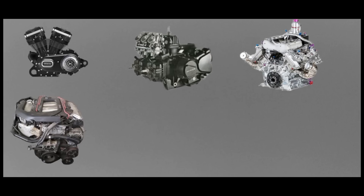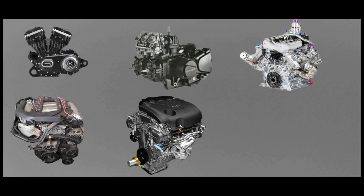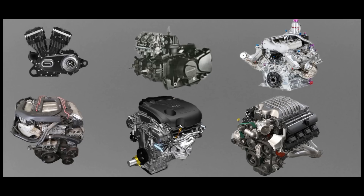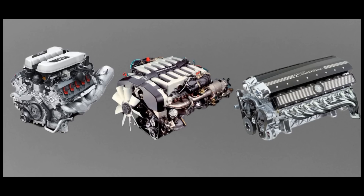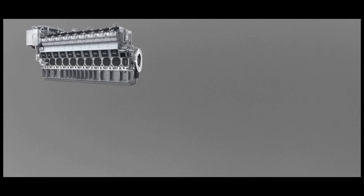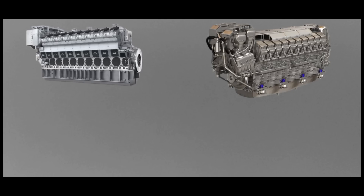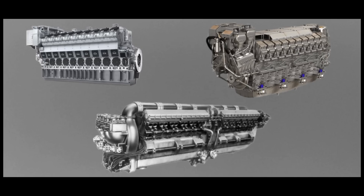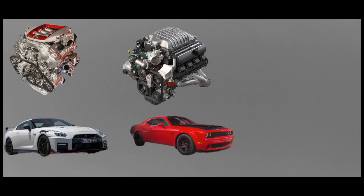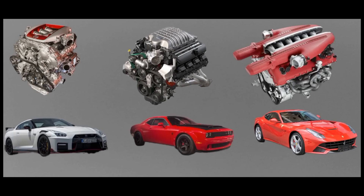The types of V-engines that have been produced are V2, V3, V4, V5, V6, V8, V10, V12, V16, V18, V20, and V24. Among these engines, V6, V8 and V12 are the most common designs for car engines.